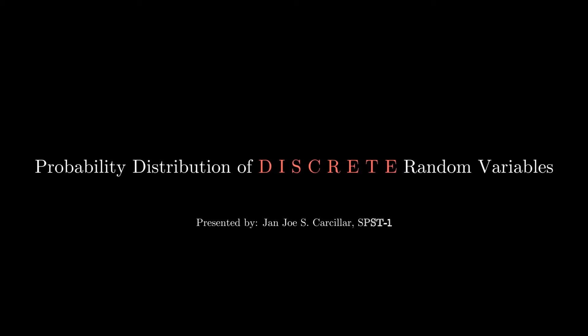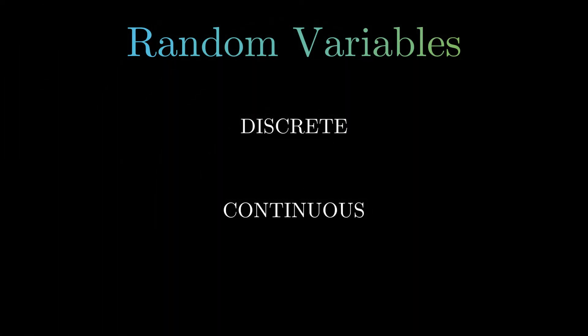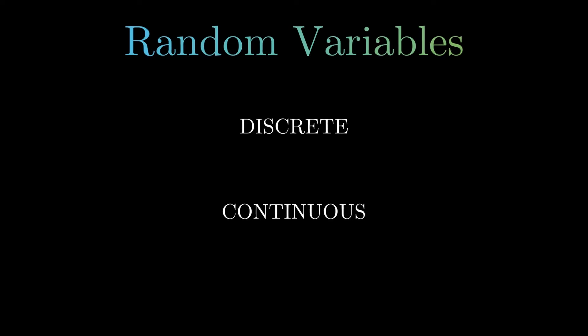Today we're going to talk about the probability distribution of a discrete random variable. From our previous lesson we discussed what a random variable is, and we found out that random variables could either be discrete or continuous. For this discussion we're going to focus on the discrete random variable and look deeper into it by discussing the probability distribution of a discrete random variable.